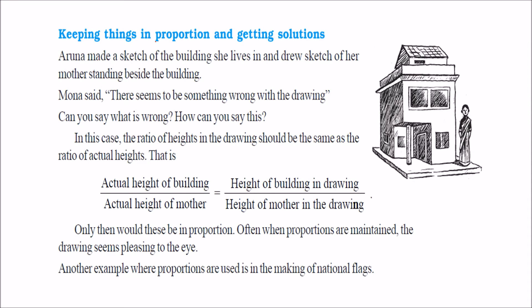How to keep things in proportion and getting solution? See, this is a house. Somebody has built it. Mona has built it and Aruna made it and Mona said, there is something wrong about this figure. Aruna asked what? See, this is the mother and she has made the mother in the picture and in this mother is reaching the second floor window. So this is not up to the scale. So how the scale can be done?